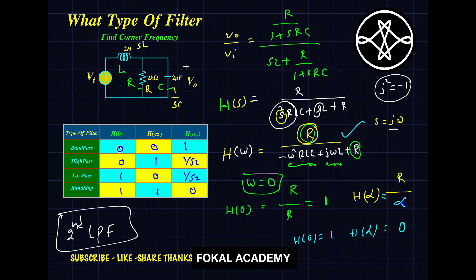Next, how to find the corner frequency. For a low pass filter, the magnitude is 1/√2 at ωc. Corner frequency is also called cutoff frequency — both terms are the same. So at the corner frequency, the magnitude equals 1/√2 for the low pass filter. We find the magnitude of this transfer function, simplify it, and equate it to 1/√2 to get the value of ωc.